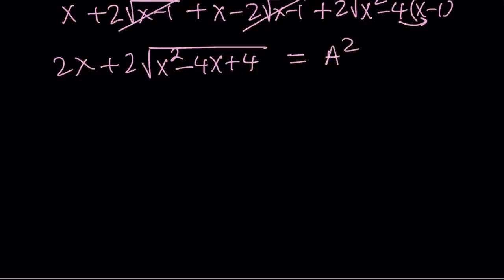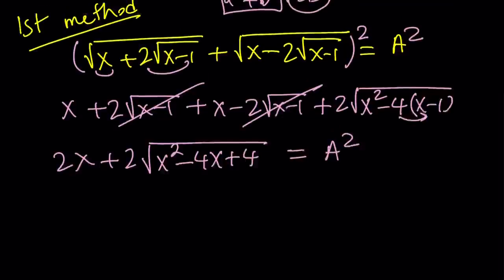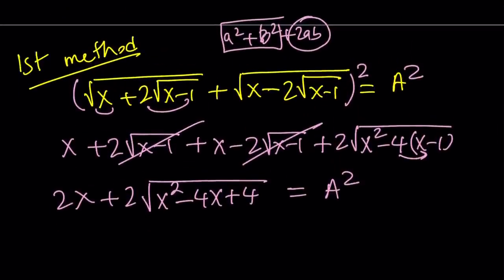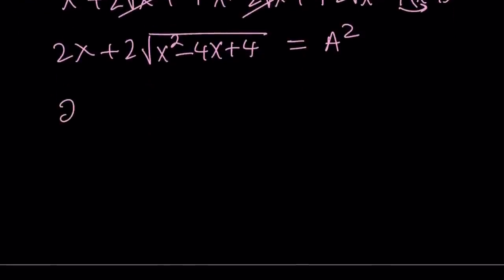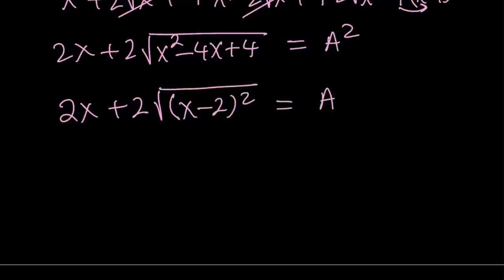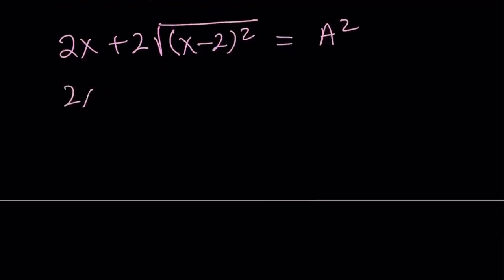Now, normally we're supposed to square root both sides, but let's simplify this a little bit more because I do have an interval for x. You know that x must be between 1 and 2 inclusive. So hopefully I can use this to simplify this radical. Notice that inside the radical we have x minus 2 quantity squared, which is nice because that's a perfect square. And now, as you know, the square root of something squared in the real number world is going to be the absolute value of that thing. So we can write this as 2x plus 2 times the absolute value of x minus 2. And that equals a².